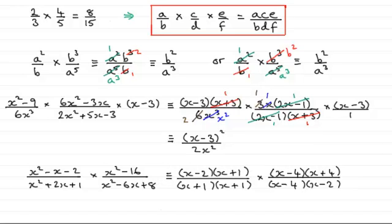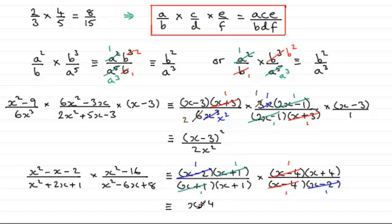We're looking for common factors again. X plus 1 here on the top cancels with x plus 1 in the denominator. X minus 4 on the top cancels with x minus 4 in the denominator. The x minus 2s are on different levels so they cancel too. So we're left with 1 times 1 times 1 times x plus 4, giving x plus 4, divided by 1 times x plus 1 times 1 times 1, which is just x plus 1. You don't have to put brackets around x plus 4 and x plus 1 — the division line acts as dividing each of those expressions.